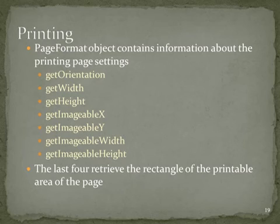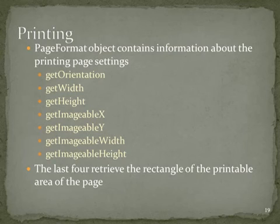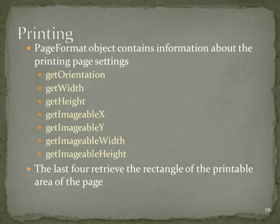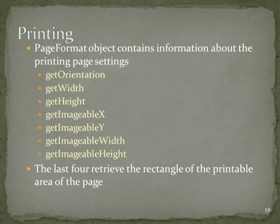The pageIndex starts at 0. The implementation of the method should return either NO_SUCH_PAGE if the page should not be printed, or PAGE_EXISTS if the page is rendered. The PageFormat object contains information about printing page settings: getOrientation, getWidth, getHeight, getImageableX, getImageableY, getImageableWidth, and getImageableHeight. The last four methods retrieve the rectangle of the printable area of the page.